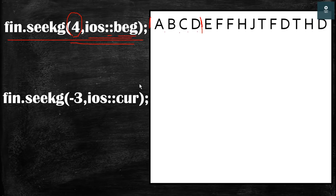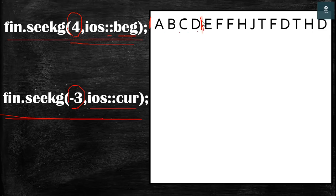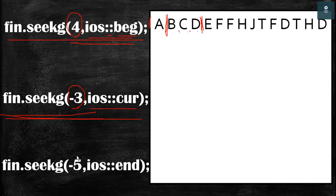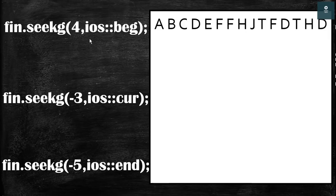To move three locations backward from the current location, we use a negative sign — so we write -3 with ios::cur as the reference point. After execution, the file pointer moves three locations backward. Similarly, to move five locations before the end point, we use -5 with ios::end. To move forward we use a positive number; to move backward we use a negative number.